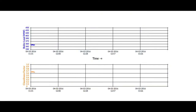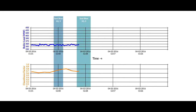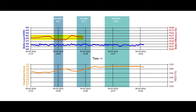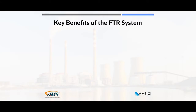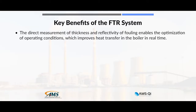At this facility's 550 megawatt boiler running under a constant load of 350 megawatts, data shows that the cleanliness factor of the heat transfer surfaces went up when the soot blowing sequences and timing were optimized by FTR. This led to boiler efficiency rising 0.2%. At the same time, the flue exit gas temperature dropped by about 70 degrees Celsius. Because the FTR system provides direct measurement of thickness and reflectivity of fouling, it allows for the optimization of operating conditions, thus improving heat transfer in the boiler in real time.